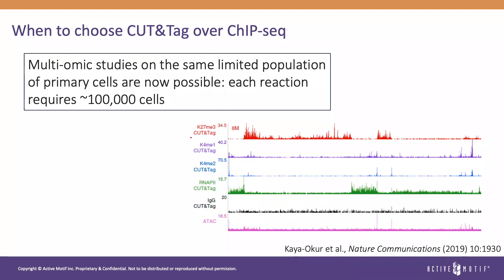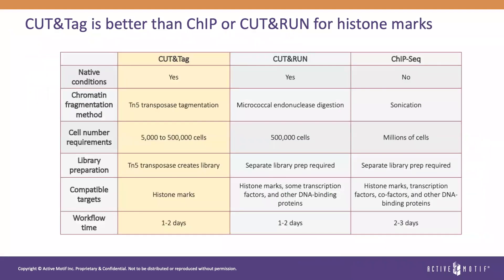Next, we'll look at the cell and workflow requirements for Cut-and-Tag versus Cut-and-Run and CHIP. Cut-and-Tag represents an improvement upon previous methods for histone marks. It uses native conditions and an enzyme that not only cuts at the antibody complex but also creates the library. While on average Cut-and-Tag experiments start with 100,000 cells — much smaller input than required for CHIP-seq and smaller than for Cut-and-Run — our kit can work with as few as 5,000 cells. The workflow is shorter and simpler due to the library being created by the TN5 enzyme.